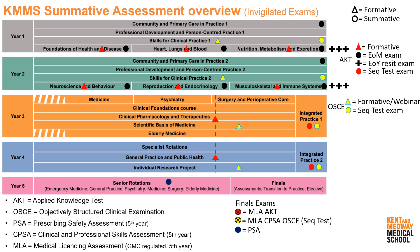The PSA is administered first, usually at the end of January, still within the senior rotations module timeframe. Students then have a webinar to prepare for the OSCE. The MLA AKT is written just after senior rotations, usually in the beginning of March. The CPSA OSCE is delivered end of April or beginning of May and is the last major assessment in the finals module. If any student requires a resit of the MLA AKT or the PSA, those are available as single-sit exams. The OSCE is sequentially tested and therefore no resit is available.